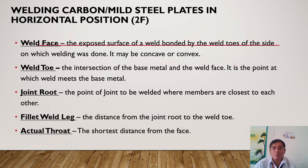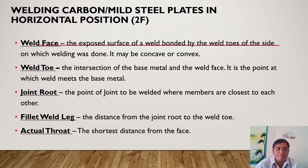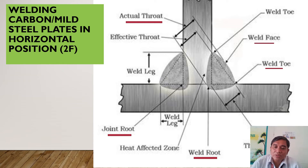The weld face is the exposed surface of the weld on the side in which welding was done; it may be concave or convex. The weld toe is the intersection of the base metal and the weld face — the point at which the weld meets the base metal. The joint root is the point of the joint to be welded where members are closest to each other. The fillet weld leg is the distance from the joint root to the weld toe. The actual throat is the shortest distance from the weld root to the weld face.